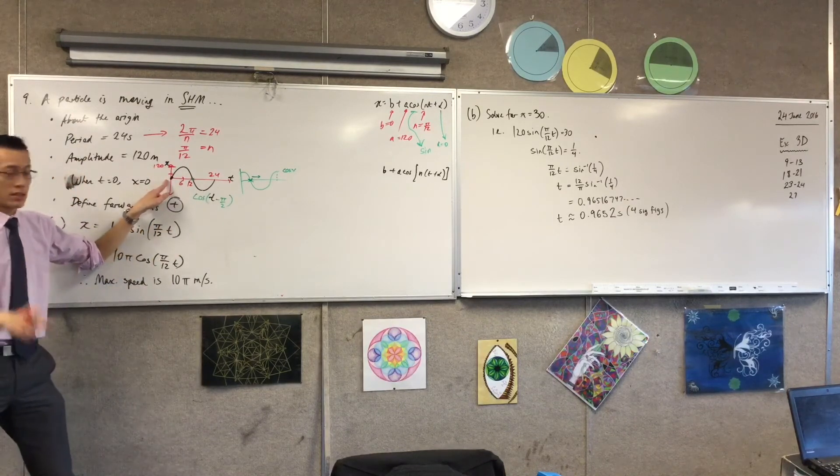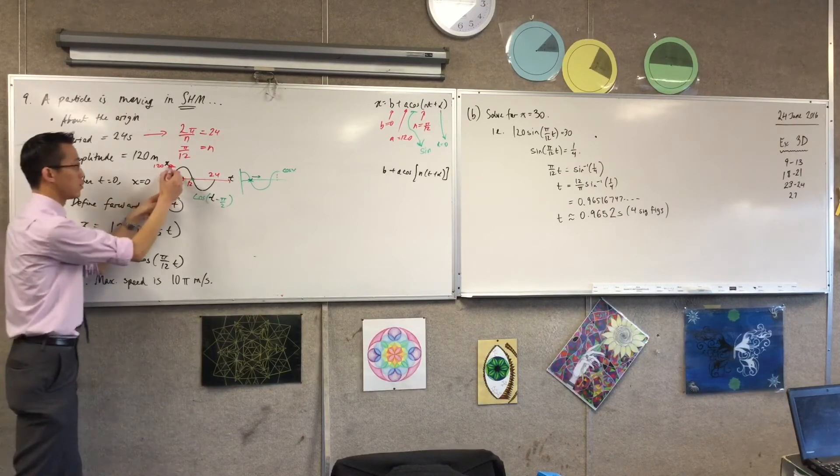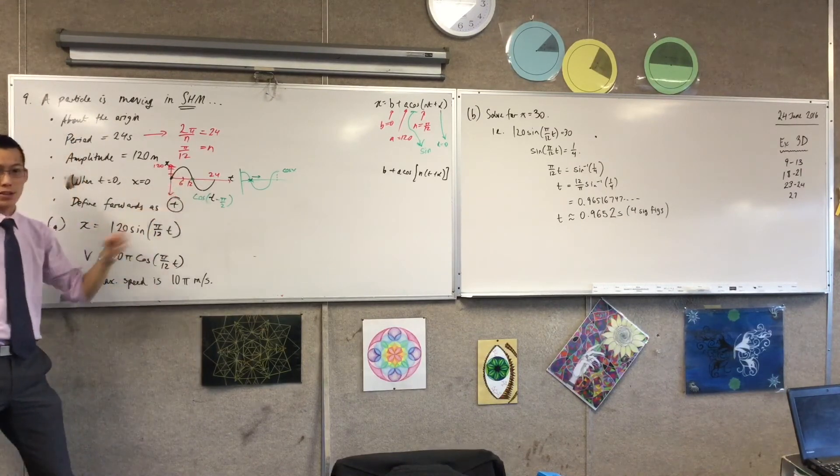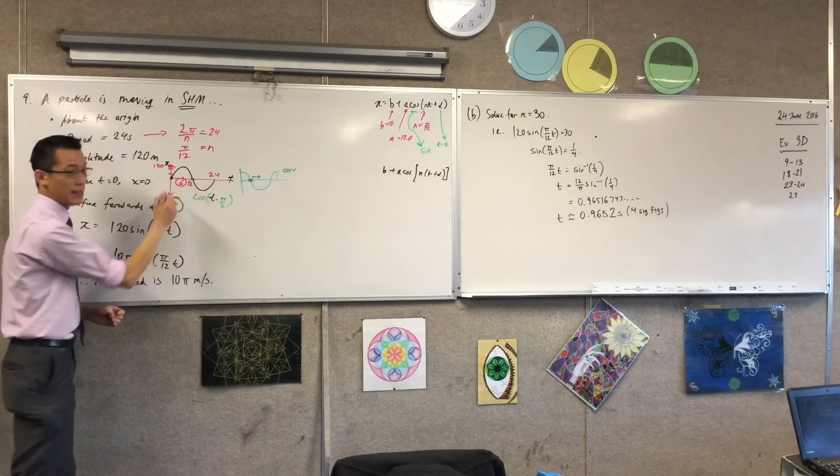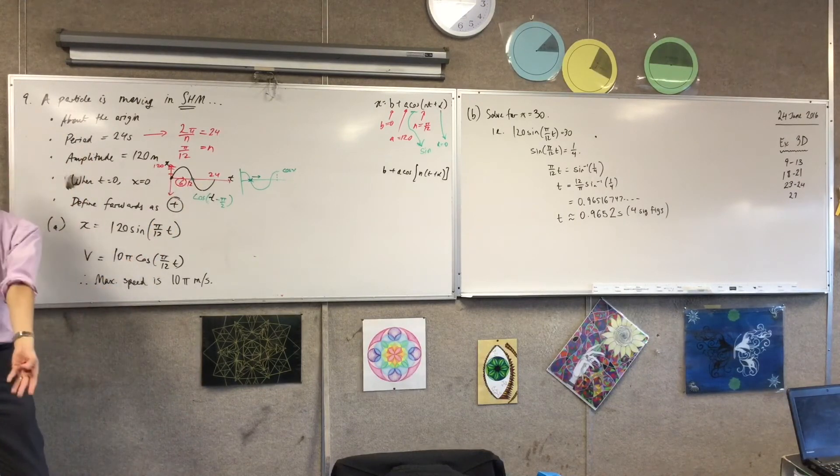Yeah, so what I would probably do is, just like I've solved here for x equals 120, I've solved for x equals 30. Probably, I mean, there's lots of ways to do this, but for my brain, the first place I go is solve for x equals 90, right? Because that's where the last 30 meters begins. I already know where the last 30 meters ends, and then you can come up with a time.